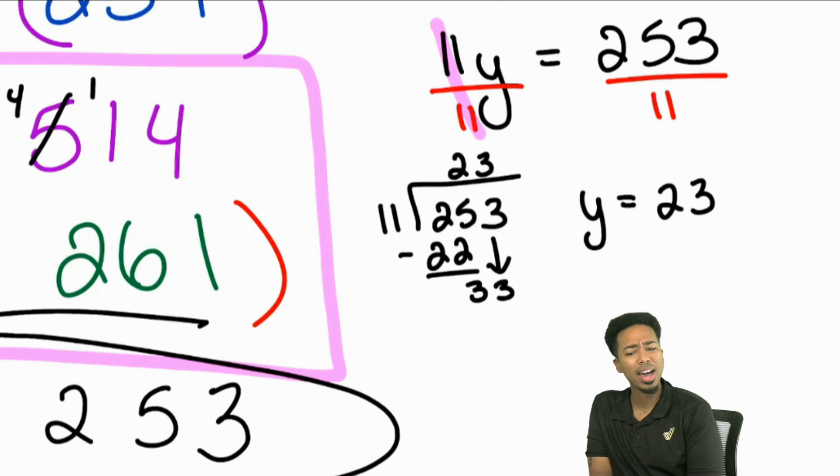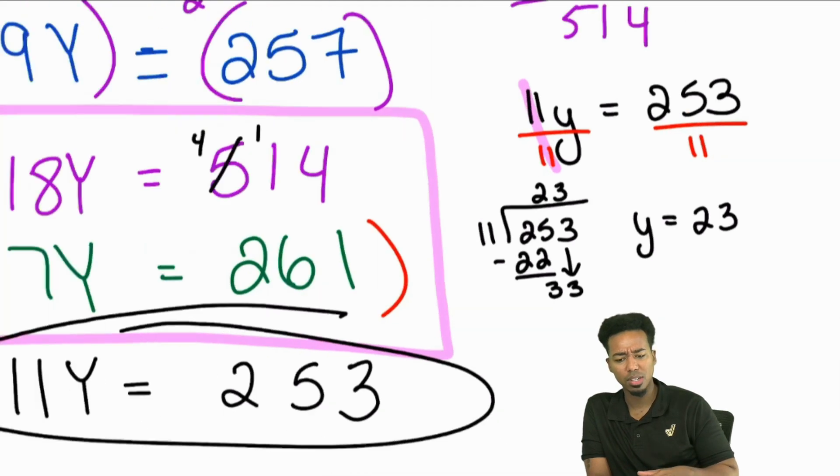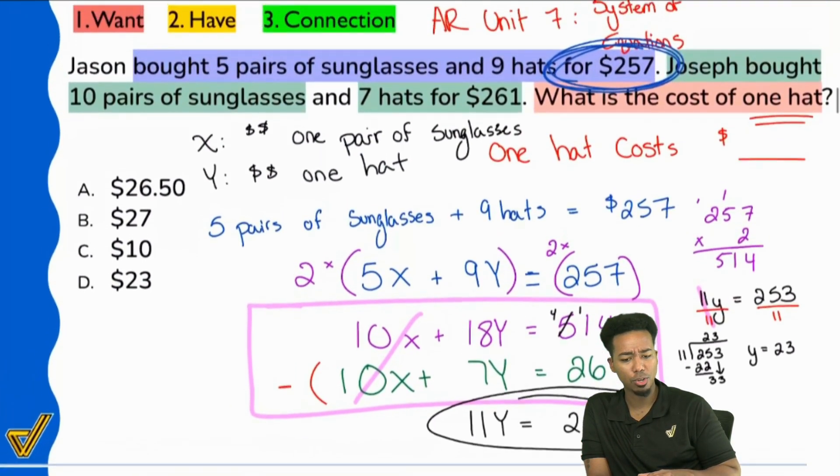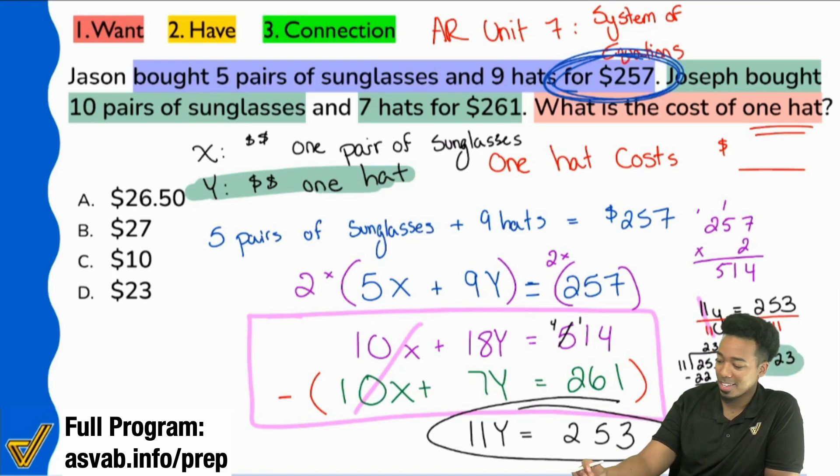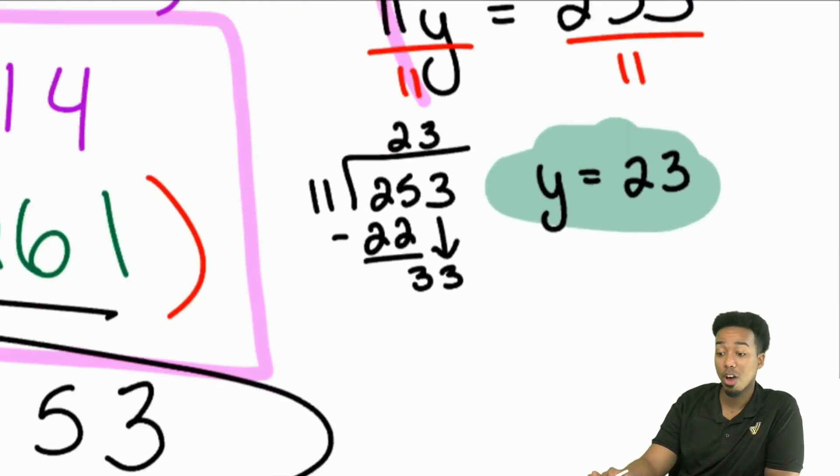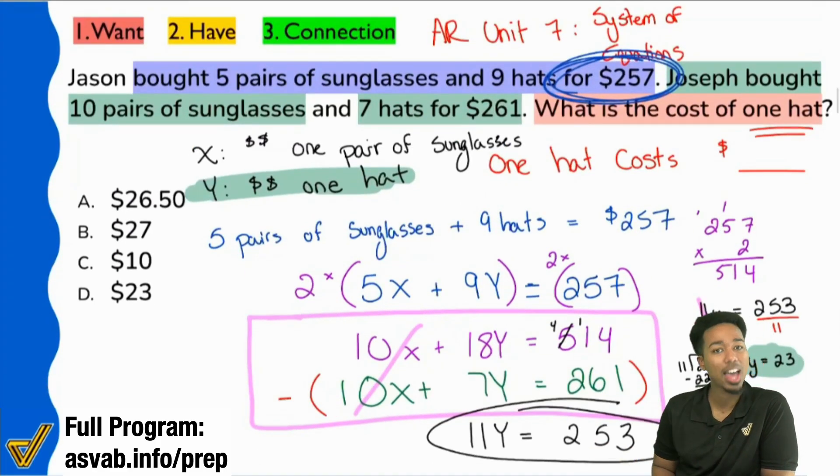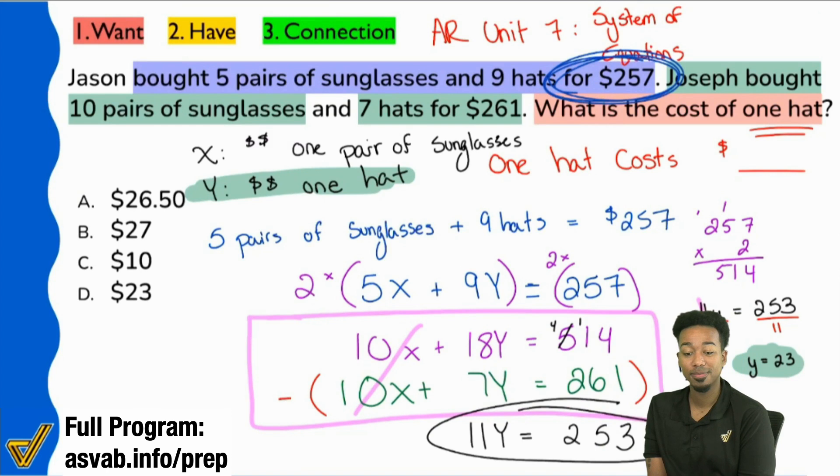Everybody, what does Y represent again? What does Y represent again? What do we say Y represents again? What did we say? And I'll show you the whole thing here. What did we say Y represents? Ah, the cost of the hat. Okay, cool. Right here. Y is the cost of one hat. We found that Y equals 23. Oh, because of that, are we done? Do we have our final answer? Yeah, we are done. We are absolutely done. The answer here is D, $23 for one hat.